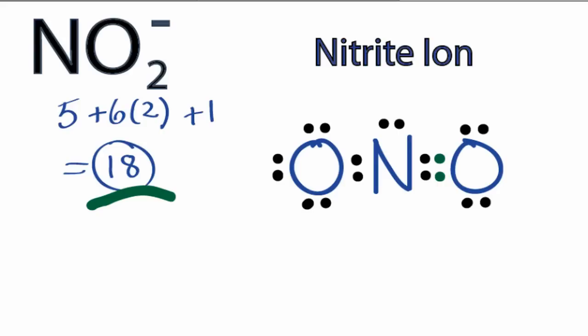So we've used all 18 valence electrons and satisfied the octets on each of the atoms. If we were to check the formal charges, you'd see that one of the oxygens, the one on the left, has a negative 1 formal charge, but that makes sense because nitrite ion has a negative charge as well.